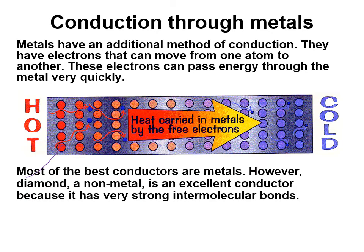Most of the best conductors are metals — for example, iron and copper are very good conductors. You'll also learn that diamond, although it's not a metal, is an excellent conductor because it has very strong covalent bonds between all the carbon atoms, giving it very strong intermolecular forces.